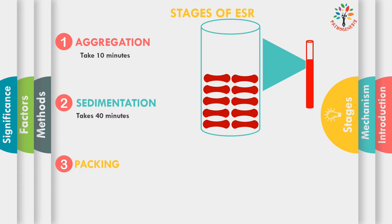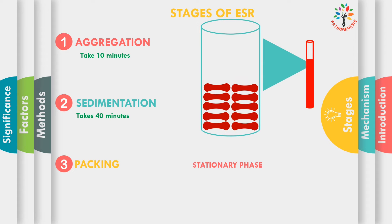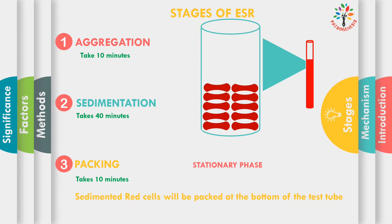The third stage is packing. This stage can be called the stationary phase. Because of the accumulation of RBCs at the bottom of the tube, the rate of sedimentation is low. The RBCs will be packed at the bottom of the tube, and this stage takes around 10 minutes to complete. After these three stages, which take a whole one hour, we can measure the ESR by measuring the clear plasma in millimeters.